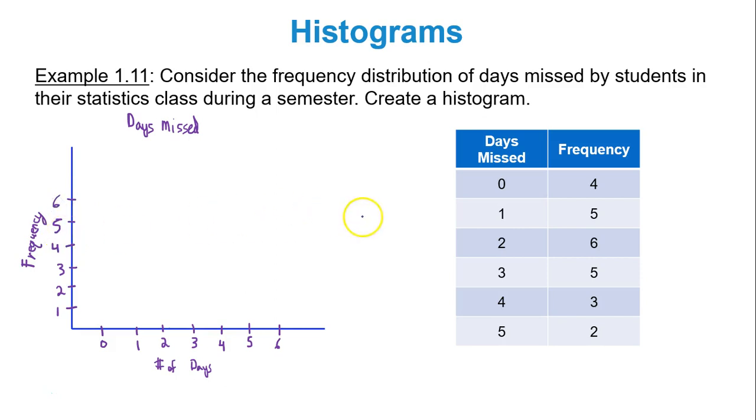If you look at 0 days missed, there's a frequency of 4. That means over 0, you need to draw a rectangle that goes up to 4. The rectangle should be centered over the data value 0. Over 1, draw a rectangle that goes up to 5. So the rectangle should be centered over 1 and go all the way up to 5. Over 2, draw the rectangle that goes up to 6. It should be centered over 2.